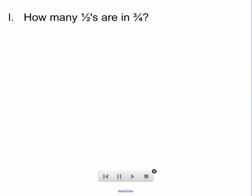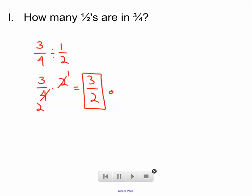How many one halves are in three fourths? What they're really asking us is, what is three fourths divided by one half? That'll tell us how many one halves are in three fourths. Set that up as multiplication — instead of dividing by one half, we'll multiply by its reciprocal. The first fraction did not change, just the second fraction. Instead of dividing by one half, we're going to multiply by its reciprocal, two. Let's simplify here first — two and four have a common factor. Two divided by two is one, four divided by two is two. Three times one is three, two times one is two. So three halves, or one and a half. How many one halves are in three fourths? One and a half one halves are in three fourths.